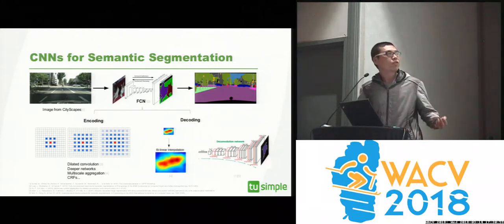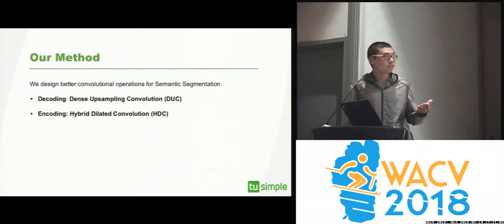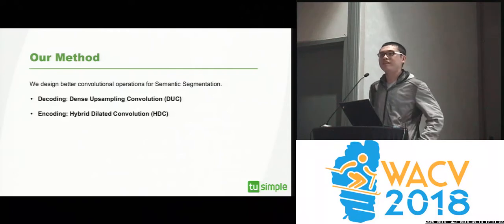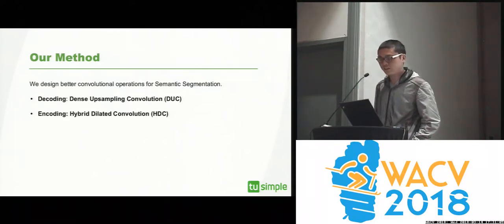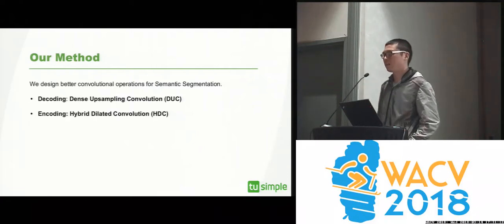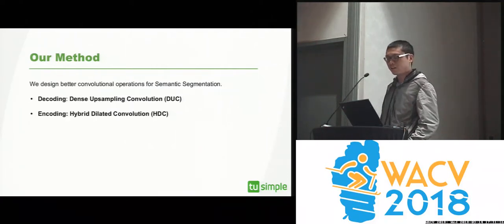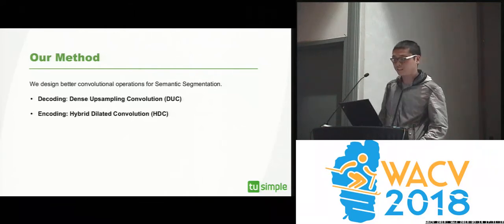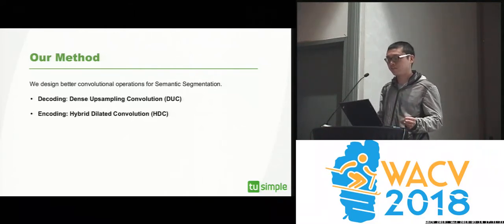In our work, we improve both the encoding and decoding phases of the neural network by designing better convolutions. In the decoding phase, I will introduce a technique called dense upsampling convolution, or DUC. And for the encoding phase, I will introduce hybrid dilated convolution, or HDC. Both of them are very simple to implement and very effective.